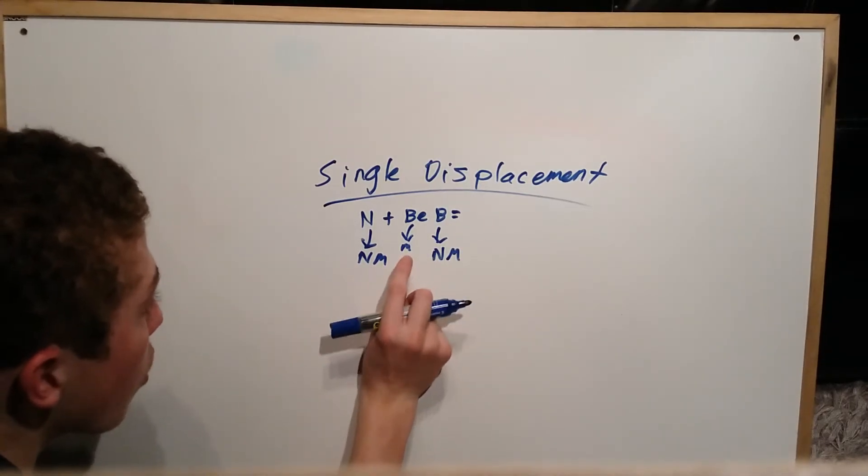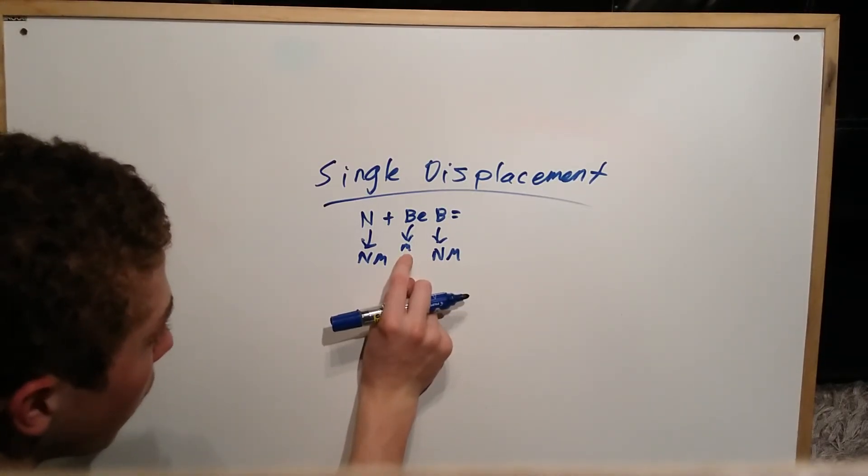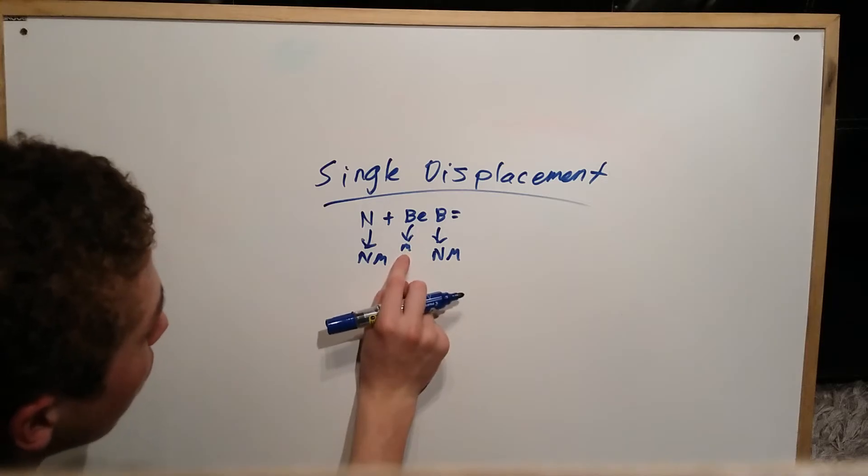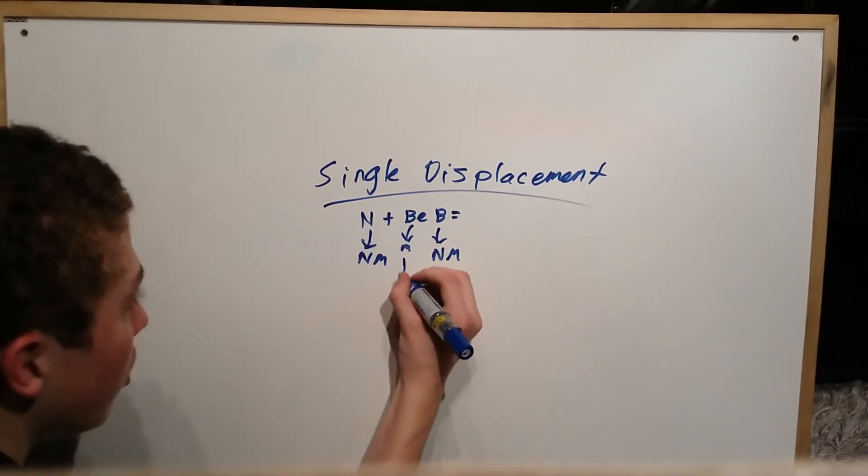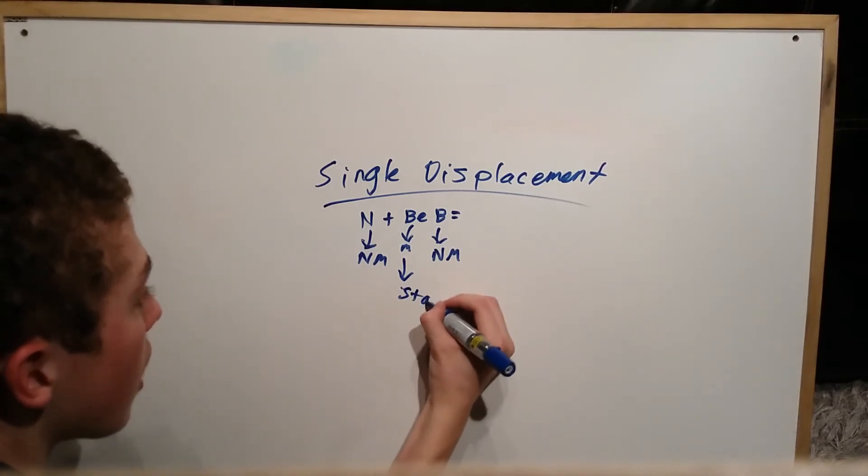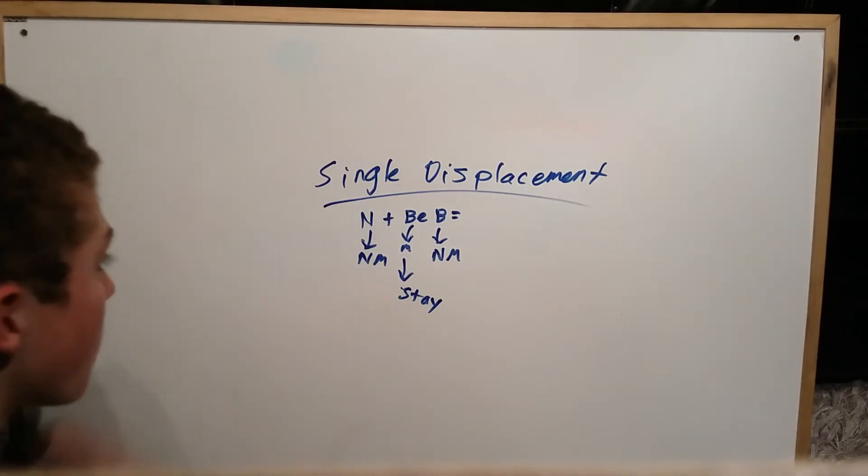So the one individual unit, so metal or non-metal, if it's by itself, like if it's the only one in the equation, it stays. So this stays.